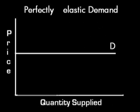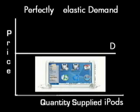Perfectly elastic demand occurs when a minor price reduction causes buyers to increase their purchases from zero to all they can obtain. This makes the elasticity coefficient infinite. An example of perfectly elastic demand could be seen with a new iPod model during Christmas season. If this model were increased in price by, say, $10, perfectly elastic demand may occur. This would happen because this small price change, along with the already large consumer demand for the product, would set it apart from other products, which are all assumed to have a higher price in this example, making the demand for iPods at that point infinite.